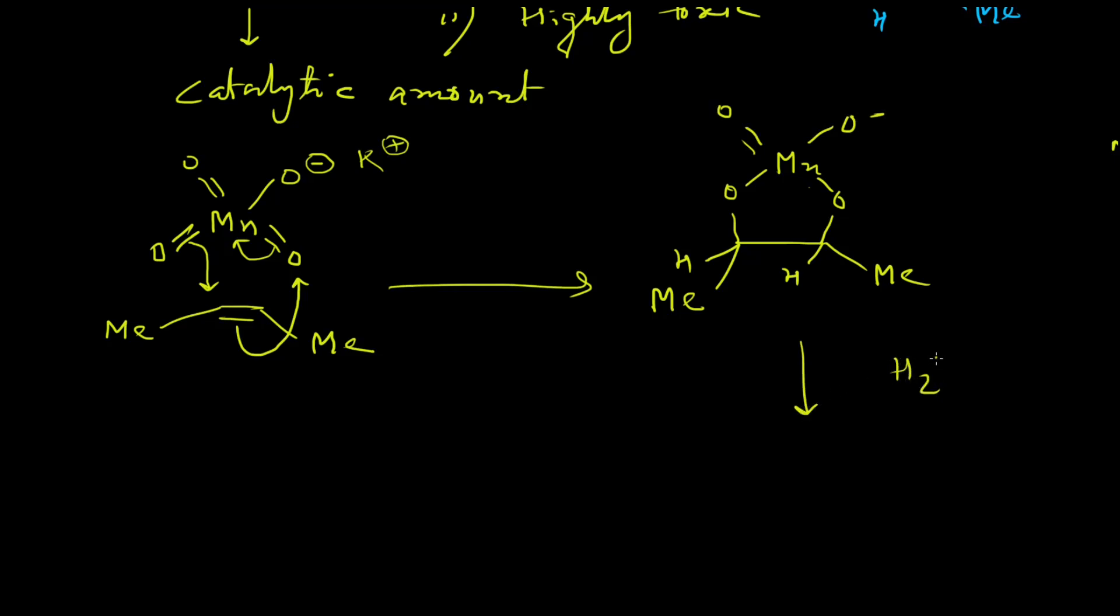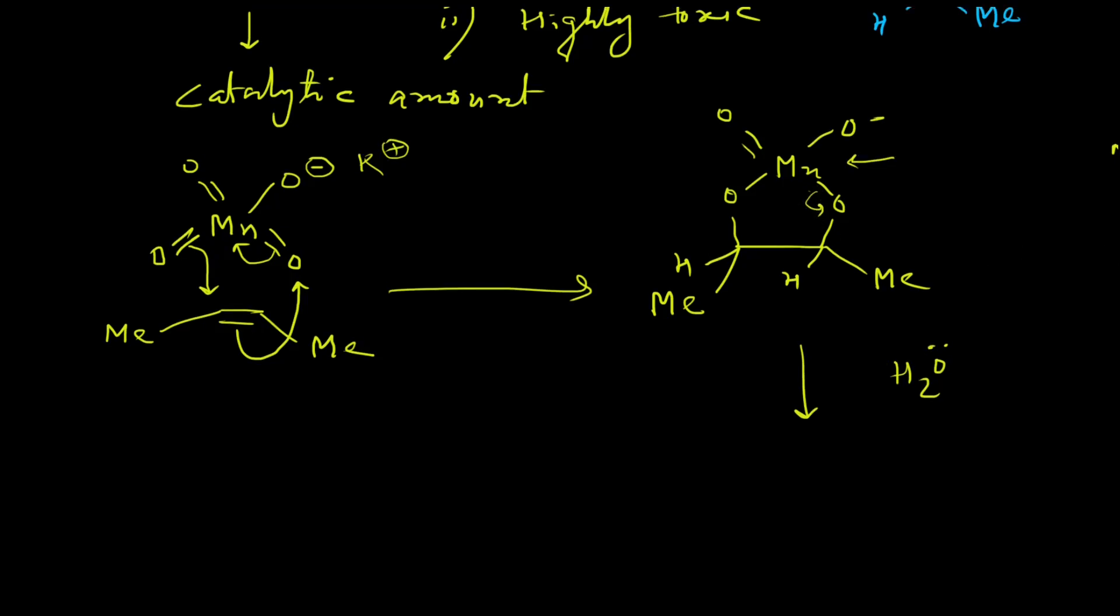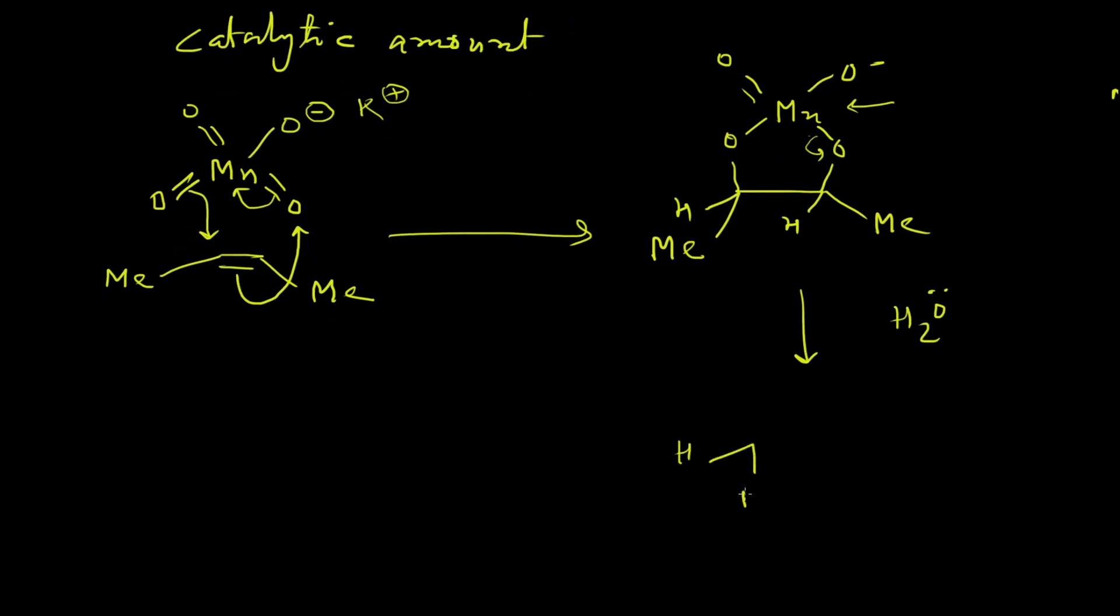The formation of permanganic ester will occur when this double bond will attack as a nucleophile to this oxygen atom. Then this manganese-oxygen double bond will break, and this manganese-oxygen bond, after dissociating, will form a carbon-oxygen single bond and this intermediate will form, which is a manganic ester. It will then undergo a nucleophilic attack by the water molecules present in the system.